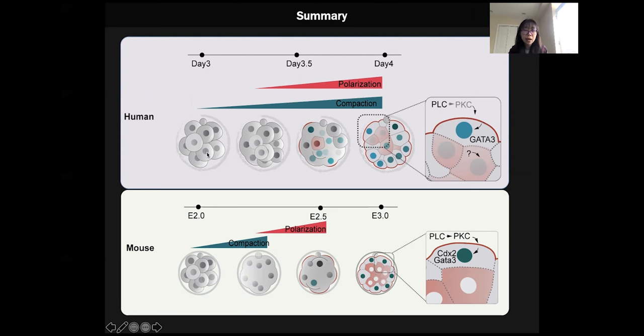I would also like to point out that during our paper submission, there was another very beautiful paper from Kathy Niakan's lab from the Crick Institute. They showed that if you inhibit the Par complex in different ways, they also lead to the reduction of GATA3 expression, similar to what we saw here. Our two studies come together to show that polarity is important for the first lineage segregation in the human embryo.